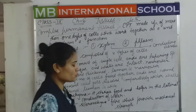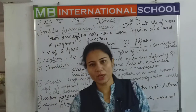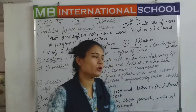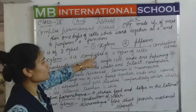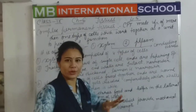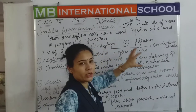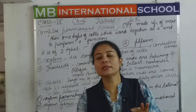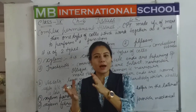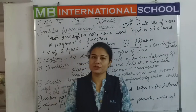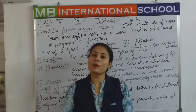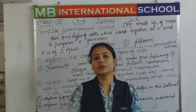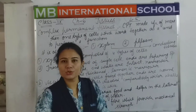We have already discussed the types of complex permanent tissues — that is xylem and phloem. These are the two types. They are commonly known as conducting tissues, because together they perform conduction of water, food, and minerals.